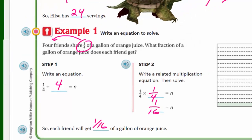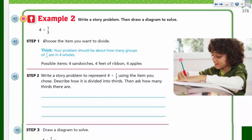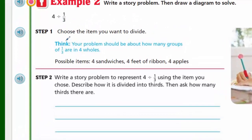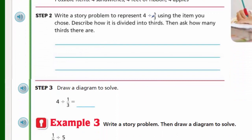All right, next page. Now write a story problem, then draw a diagram to solve. All righty, we have four divided by one third. Choose the item you want to divide. Now think, your problem should be about how many groups of one third are in four wholes. So possible items could be four sandwiches, could be four feet of ribbon, could be four apples. I like the fact we have to write our own story problem. This really will demonstrate good mastery. So write a story problem to represent four divided by one third using the item you chose. Describe how it is divided into thirds, then ask how many thirds there are. Okay, well, they gave us some clues here. I'm an apple kind of guy, you know, an apple a day keeps the doctor away. So I'm going to choose apples.